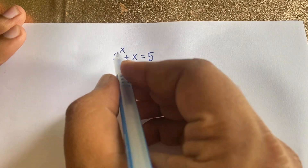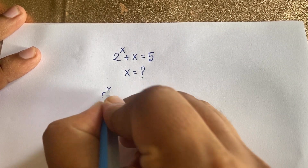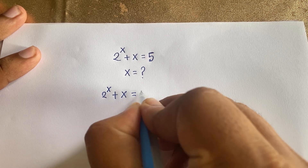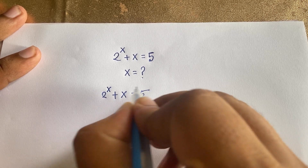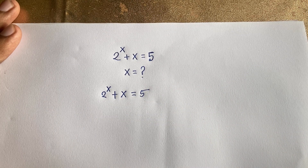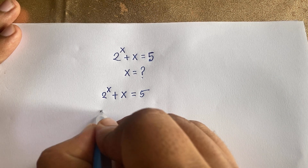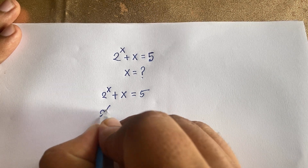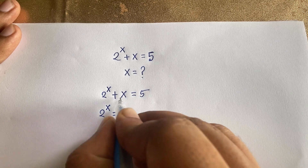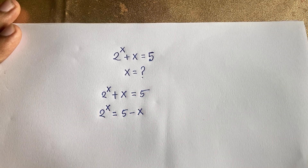Our question is 2 to the power of x plus x is equal to 5. Now I can easily rearrange this — 2 to the power of x is equal to 5 minus x. I subtract x from both sides.